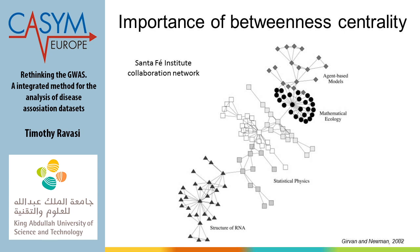Another important example from Santa Fe, still on humans: now that we know the topology — preferential attachment, clustering coefficient, power law, small world — we can also predict how information flows through the network. There is a parameter called centrality: it tells you how central a node is in the network. Why is this important? Look at this network of people in different research disciplines at the Santa Fe Institute. Statistical physics is so important and central that in order for these people to collaborate, you also need to go through the statistical physics people.